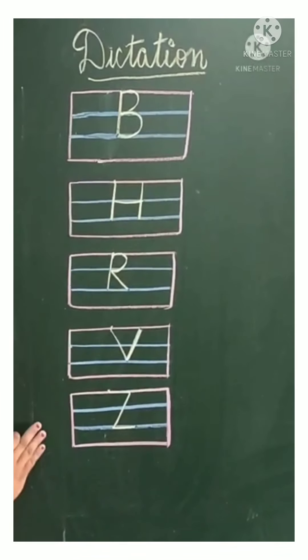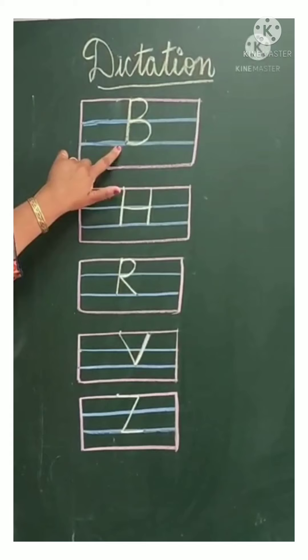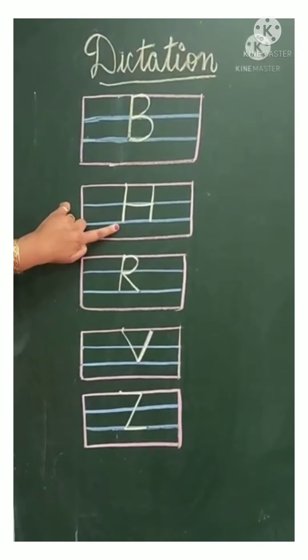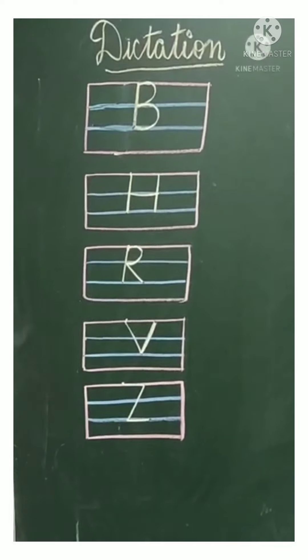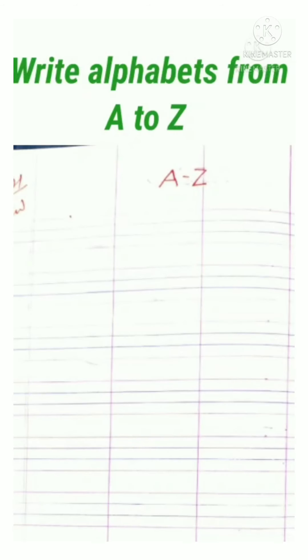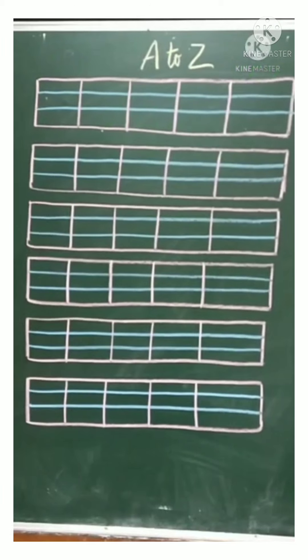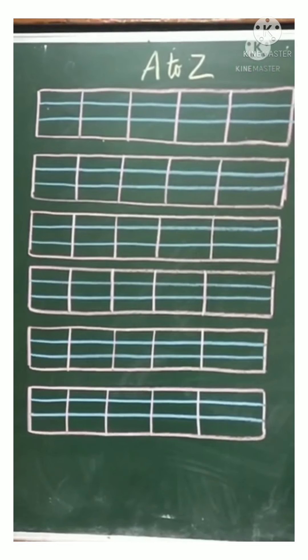You have already learnt A to Z. So now you should recognize the alphabets and try to write, do daily practice. Now let's write A to Z on the second page. So look on the blackboard.